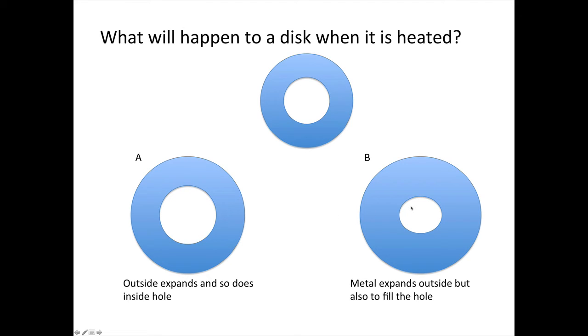Or is it going to expand such that the inner ring expands inwards to fill up the space left empty in the middle and the outer ring expands outwards so that the whole thing gets bigger but the hole in the middle becomes slightly smaller?